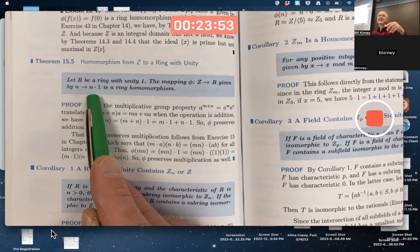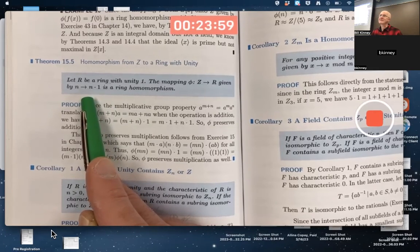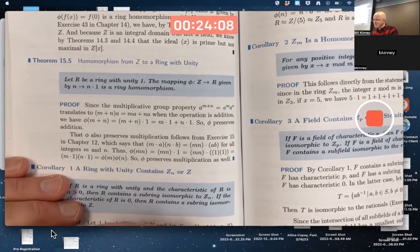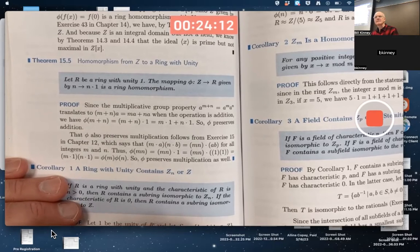Negative 1, the additive inverse of the unity, added to itself the absolute value of N times if N is negative. And by definition, if N is 0, it means the 0 element of R. That's a ring homomorphism. In fact, it is also 1 to 1. Not necessarily onto, but 1 to 1.